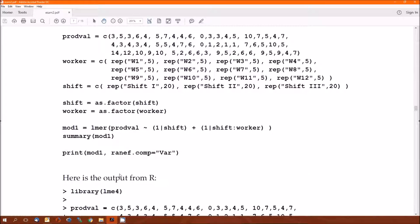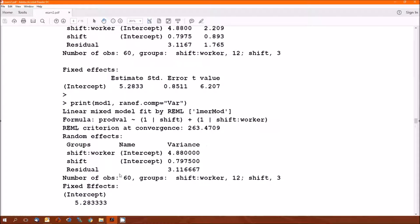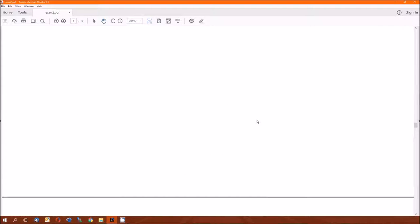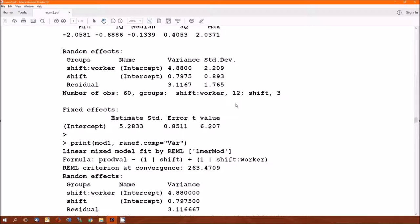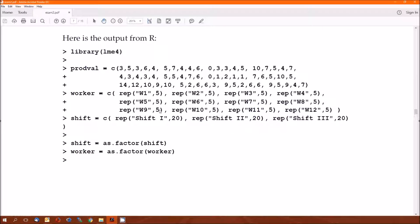Here's some input. Now here's the output. Now let's answer these questions. How many levels are there in the worker variable? There are 12. How do I know that? Well, one says 12 here. That's one way I know that. Two, it says 12 here. That's another way I know that. Three, I can just count the number of worker variables. There's 12 of them. So the answer is 12.